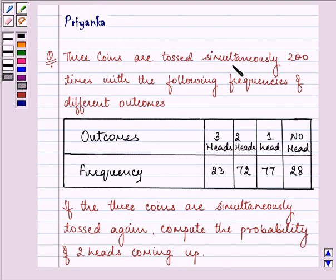The question says 3 coins are tossed simultaneously 200 times with the following frequency of different outcomes. Now these are the outcomes and this is the frequency.